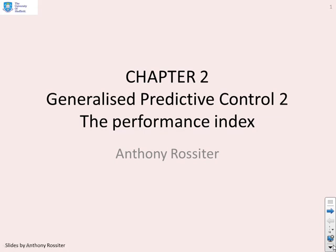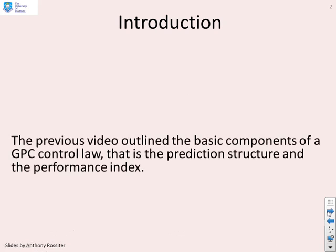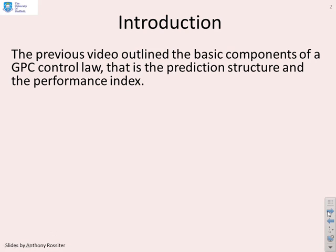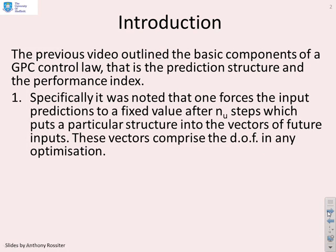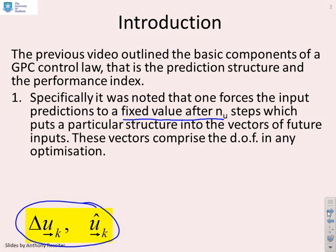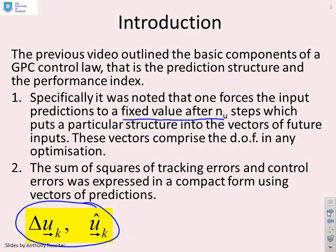This video looks at the performance index within Generalised Predictive Control. The previous video outlined the basic components of a GPC control law — the prediction structure and the performance index. We looked at the input predictions and noted that we assume the inputs become fixed after NU steps, which puts a particular structure into our degrees of freedom — the vector of future input values. We also noted that the performance index, the sum of squares of tracking errors and control errors, can be expressed in a compact form using vectors of predictions.